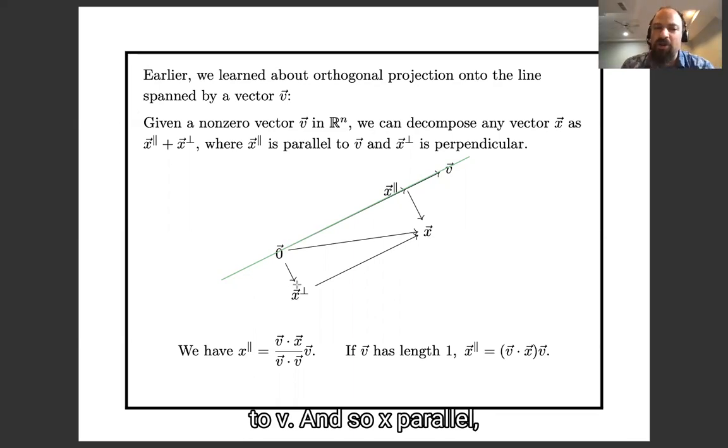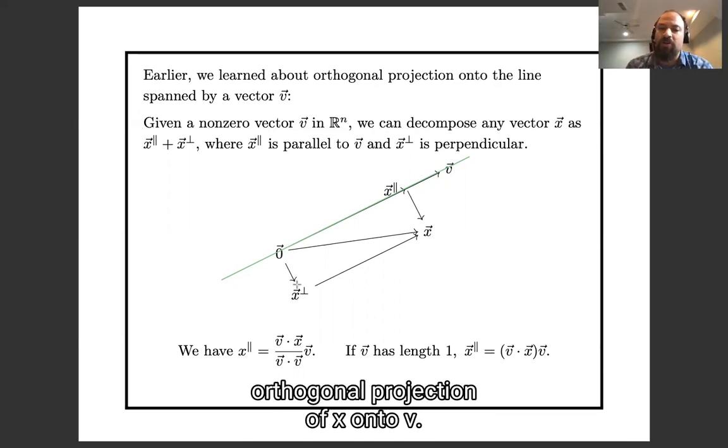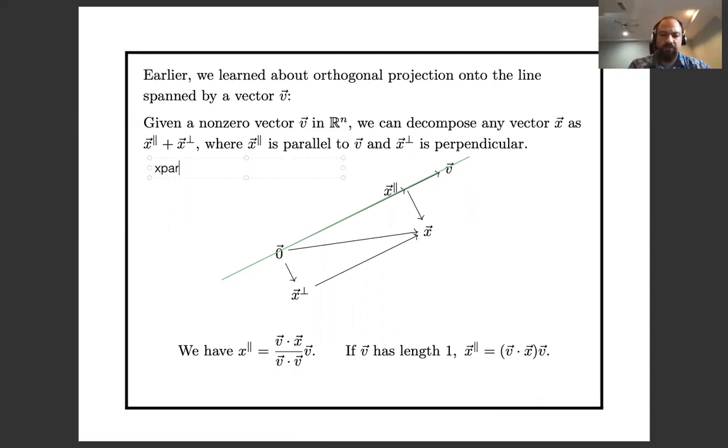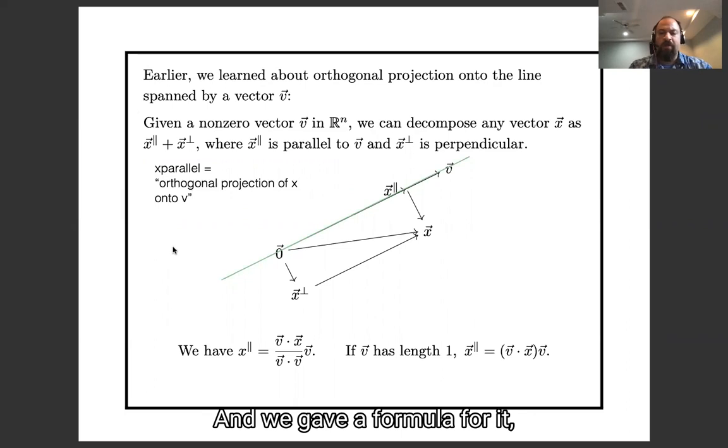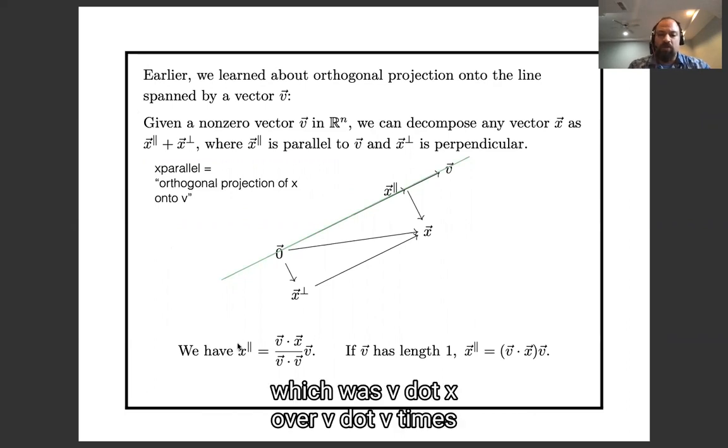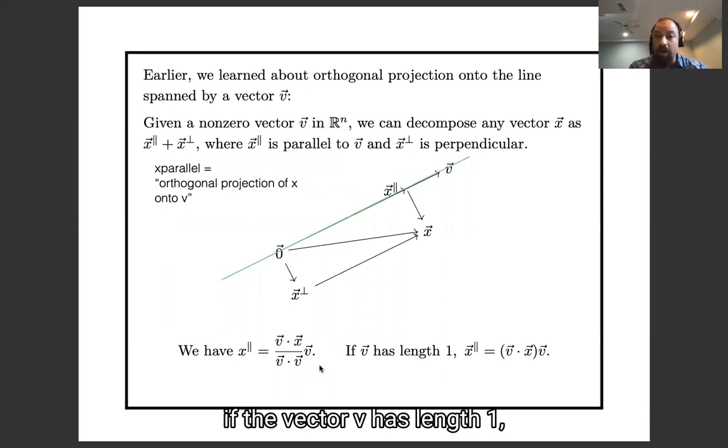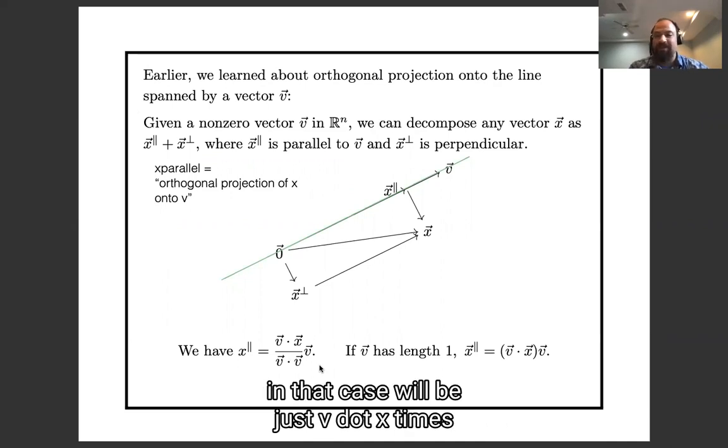And so x parallel was called the orthogonal projection of x onto v. And we gave a formula for it, which was v dot x over v dot v times the vector v. And for today we should notice that that's going to get simpler if the vector v has length one. In that case it will be just v dot x times the vector v.